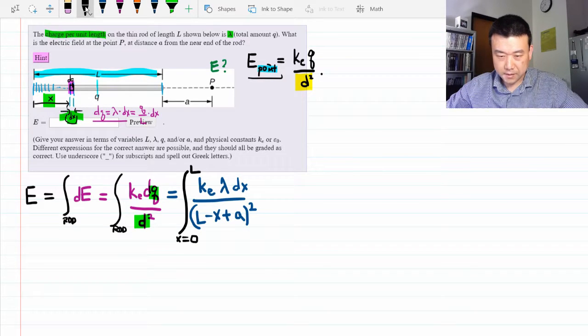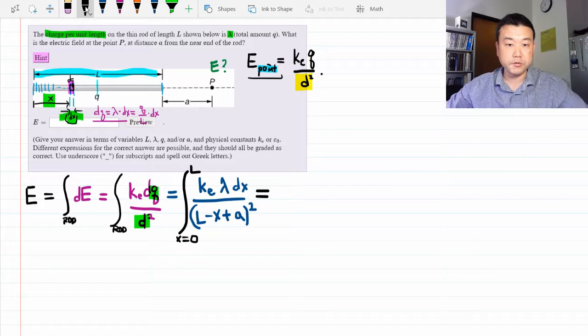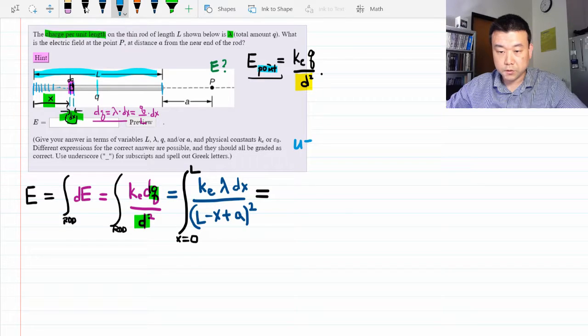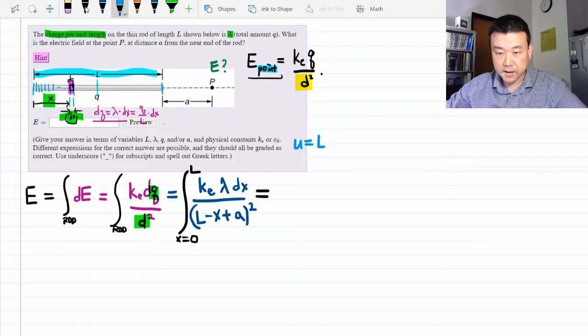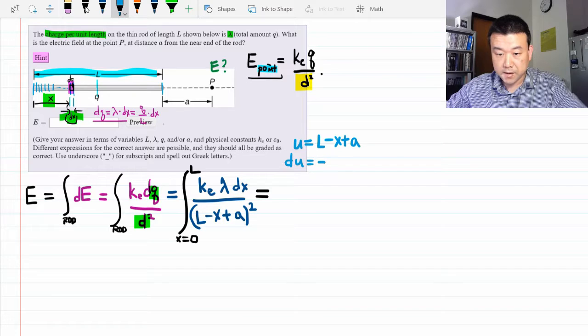Staring at it for a bit, it looks like the best way to do the integral is by U substitution. So let me use this algebraic substitution of U is equal to L minus x plus A and du is equal to differentiating this minus dx.